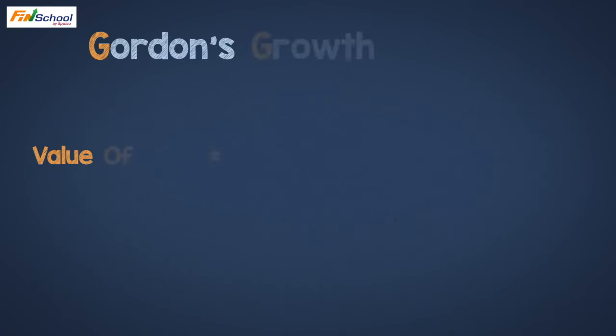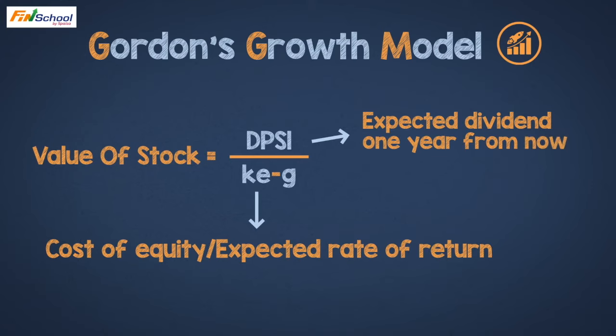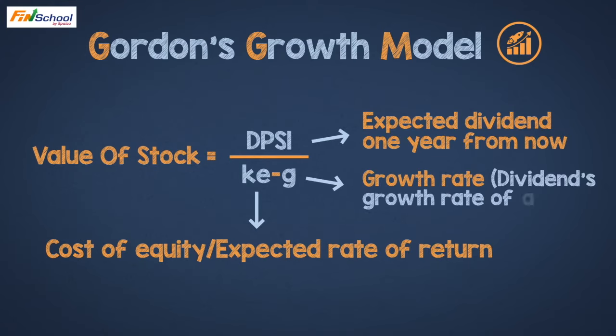The Growth Rate, which is G in the formula, is the growth rate of the dividend — i.e., at what percentage can the company grow its dividend in a stable state, forever.